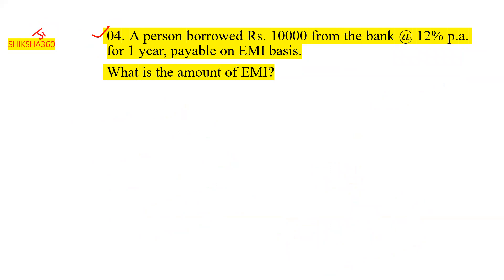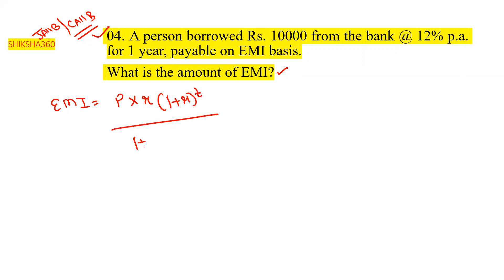Question four is a definite one-mark question in both JAB and CAB: calculate the EMI. EMI stands for Equated Monthly Installment — a fixed monthly payment that remains the same from start to end. The EMI formula is: EMI = P × r × (1 + r)^t ÷ [(1 + r)^t − 1]. Here, the rate of interest must be divided by 12 since EMI is calculated monthly. A person borrowed rupees ten thousand at 12 percent per annum.